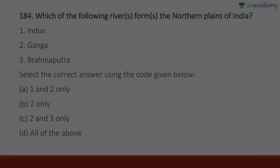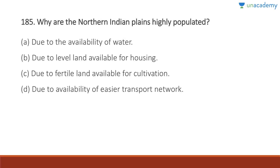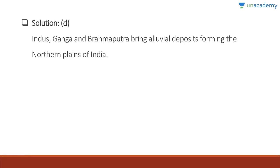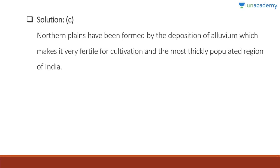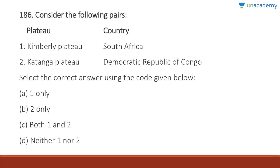Question 184: Which rivers form the Northern Plains of India? Indus, Ganga, and Brahmaputra — all of them form the Northern Plains. Answer is all of the above. They are related to alluvial deposits. Question 185: Why are the Northern Plains highly populated? They have alluvial soil making them very fertile. Because of their fertility they can support a huge population. Answer is C — due to fertile land available for cultivation. The most thickly populated region of India is this belt, which includes Uttar Pradesh and Bihar.